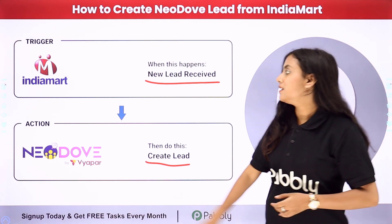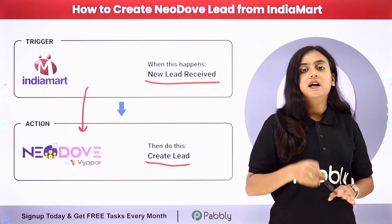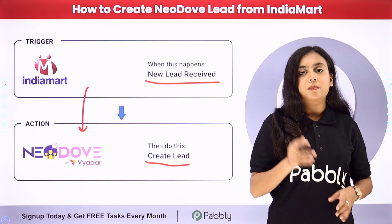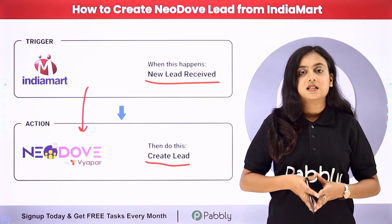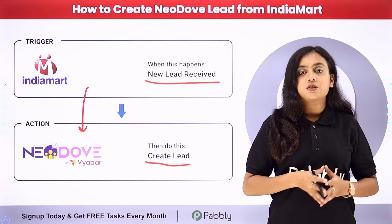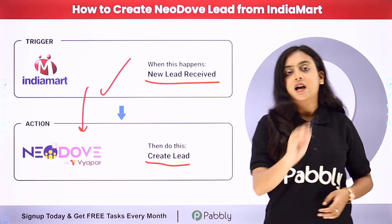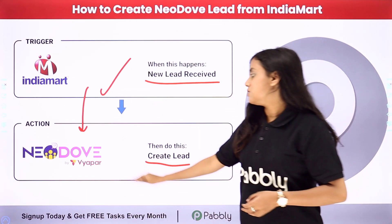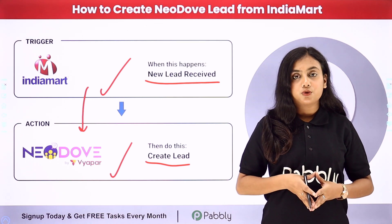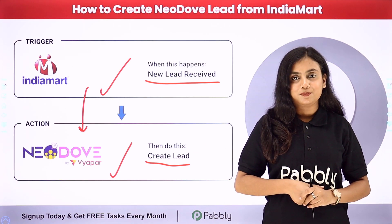For that we need to create an automation between IndiaMart and Neodove with the help of Pabbly Connect. Pabbly Connect runs on two principles: trigger and action. In this process, my trigger application is going to be IndiaMart and my action application is going to be Neodove. If you want to learn how to do this automation, let me take you to my screen.